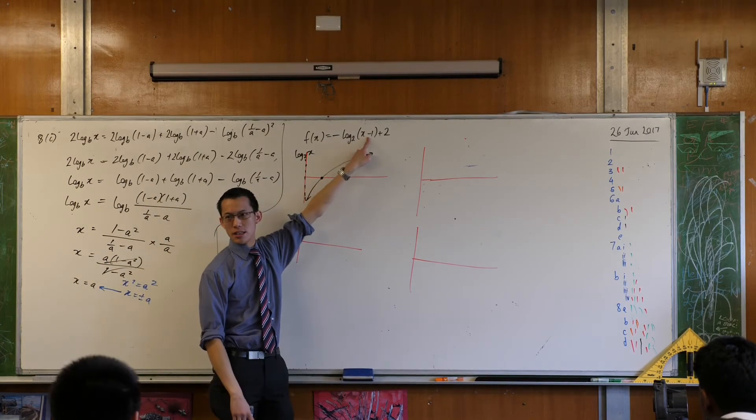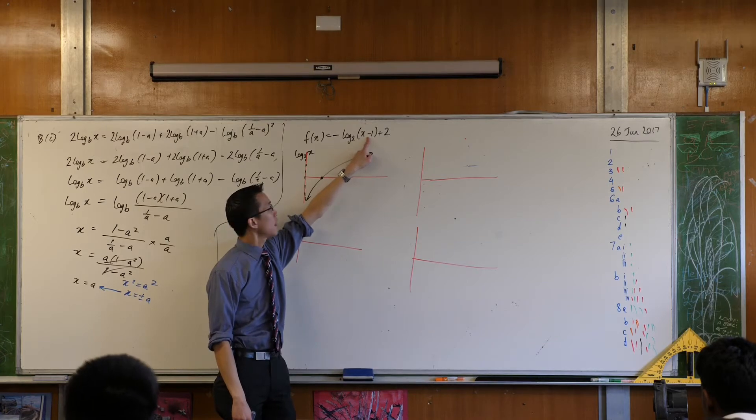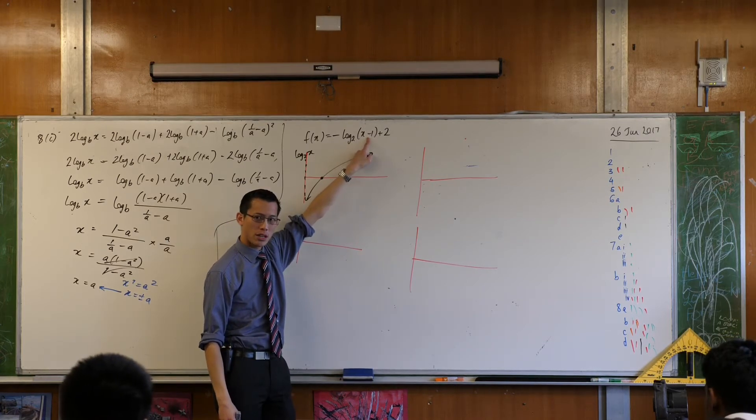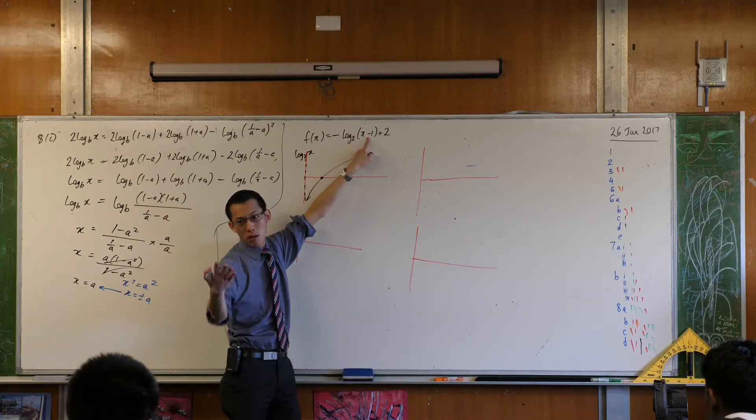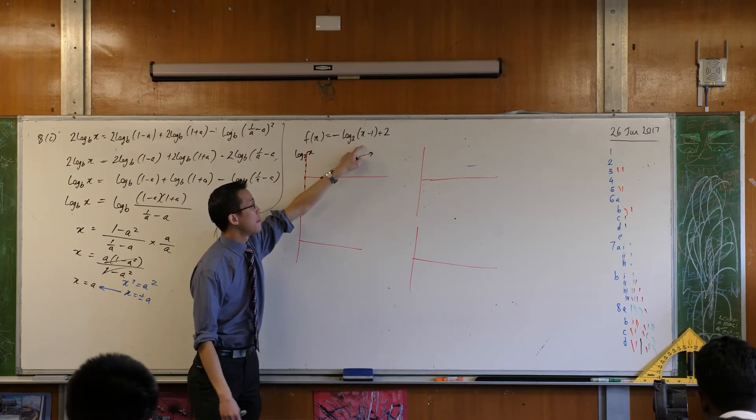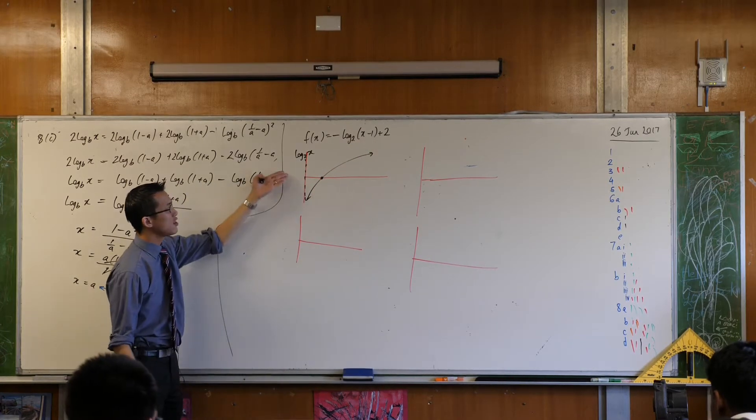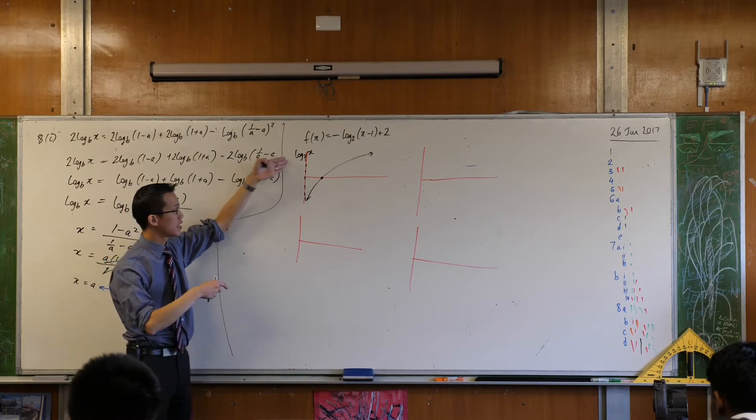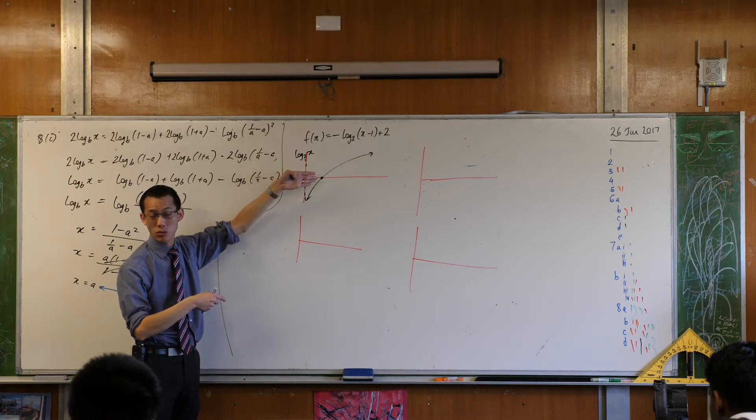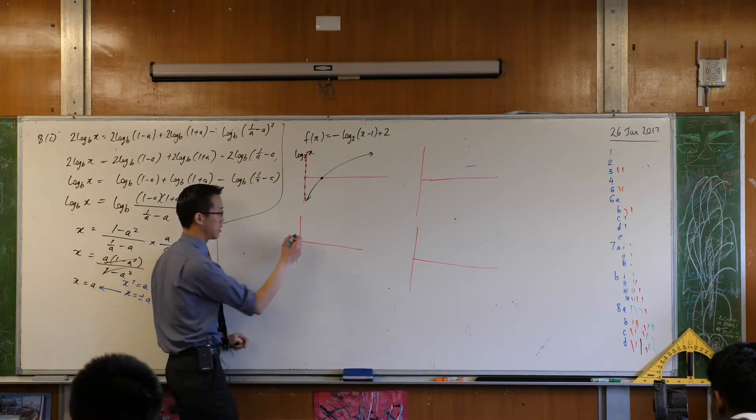Now, the first thing that gets changed is this minus 1, that's a shift, what direction is it in? It's to the right. It's horizontally because it's mucking with the x, and that minus 1 tells me go that way. So what that does is it changes the asymptote, it's no longer at x equals 0, now it's at x equals 1.